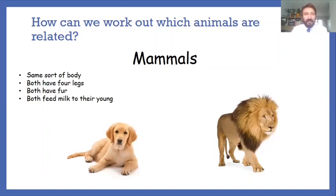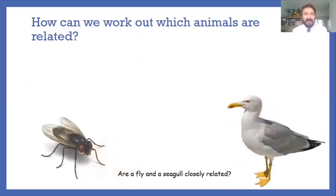Now if we move to the next slide, let's have a look at these two animals. We've got a fly and a seagull. Again, take 30 seconds, maybe longer, jot down all the similarities and the differences between these two animals and we can see if these two animals are of the same classification.